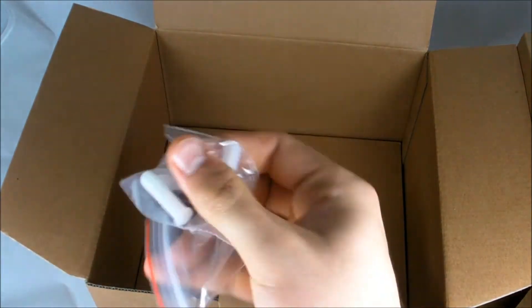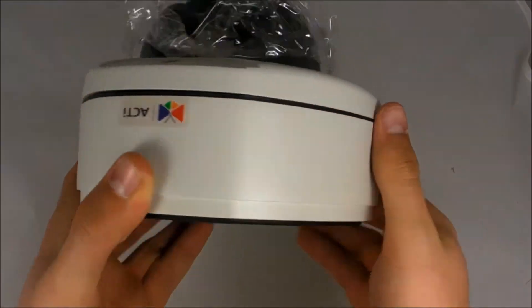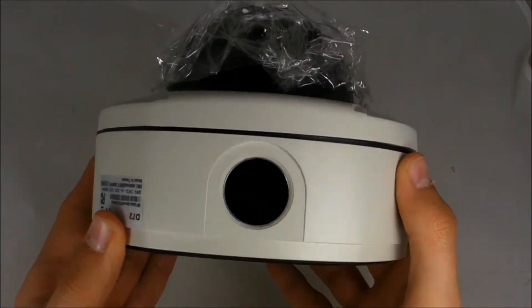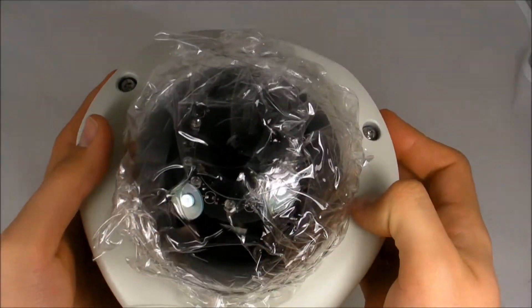So here it is, the D72, let's take a closer look at it. As said before this is a 3MP dome camera that can shoot 15fps at 2048x1536 and has a viewing angle of 82.3 degrees.